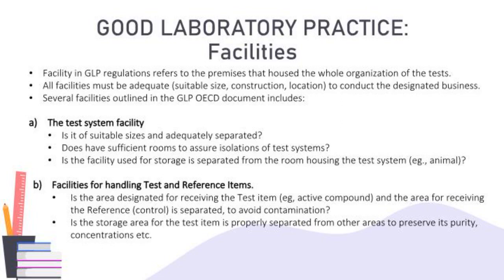Some of the facilities outlined in the GLP document are the test system facility. Is it of suitable sizes and adequately separated? Does it have enough rooms to ensure sufficient isolation of the systems? Is the facility used for storage separated from the room that houses the test systems? Is the area for handling the test item — our test compound — well separated from the handling area of the reference item — our control item — to avoid any risk of contamination? Is the storage area for the test item properly isolated from other areas in order to guarantee its purity and concentration?